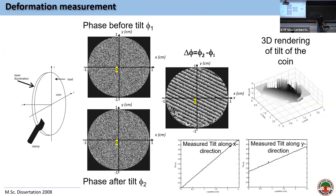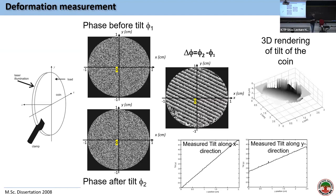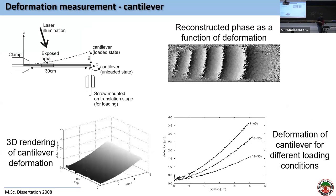When you subtract the phase of the first state from the second, the randomness cancels and only the phase due to deformation remains. This is called the wrapped phase — always between 0 and 2π. You then apply an unwrapping algorithm to convert it to a continuous phase. This gives the deformation in x and y, measurable down to approximately 10–15 nanometer resolution for rough samples.